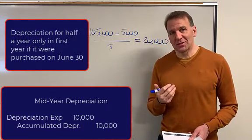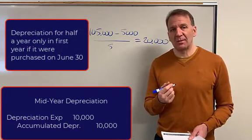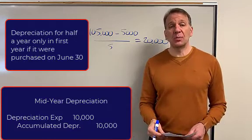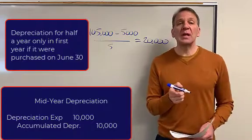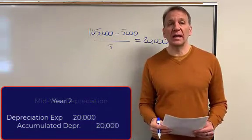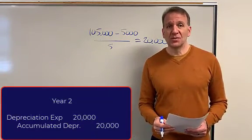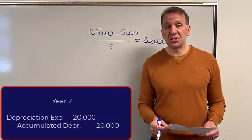You would just have half of that amount or $10,000 depreciation expense, that would be your debit and credit accumulated depreciation $10,000. Then in year two, you would have that full $20,000 again. That's what partial year depreciation is.